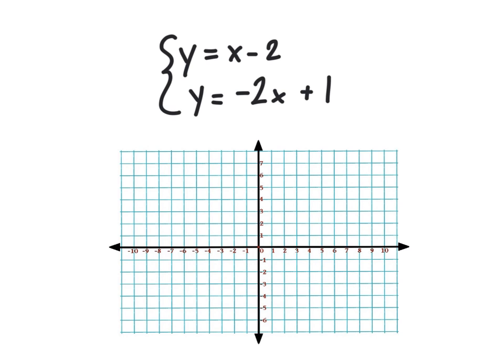This is just a quick review of solving a system of linear equations using graphing. Each of these equations is written in slope-intercept form, and so there's a fairly quick way to get them graphed. And then what we're going to do is just look for where the lines cross.